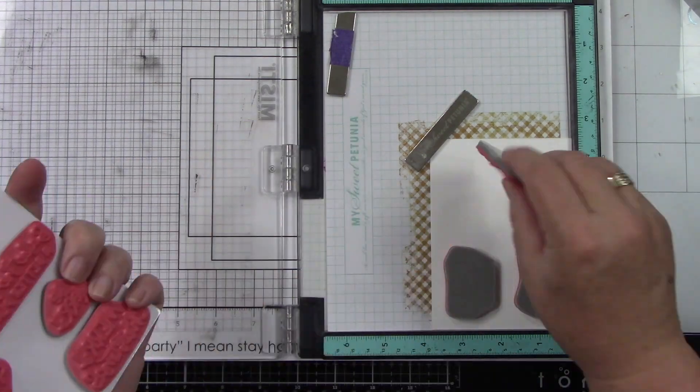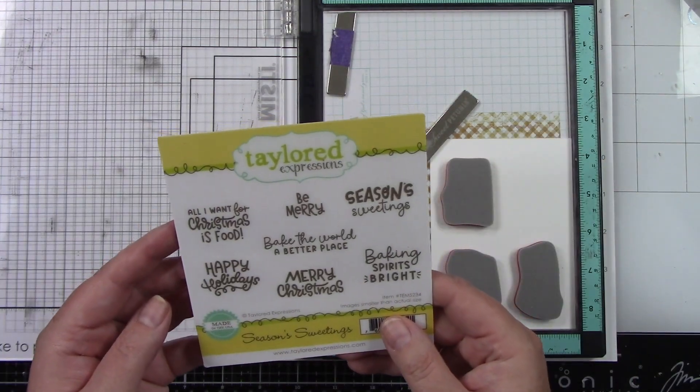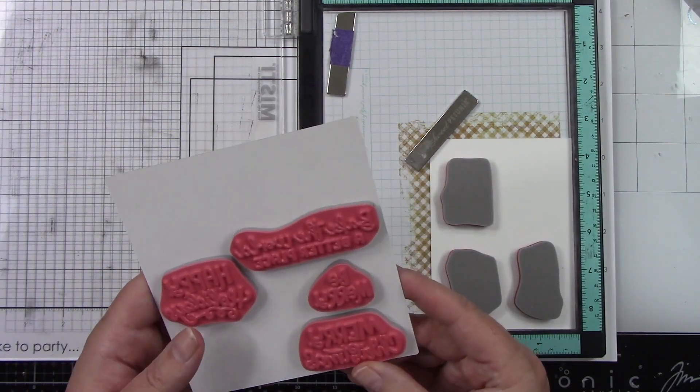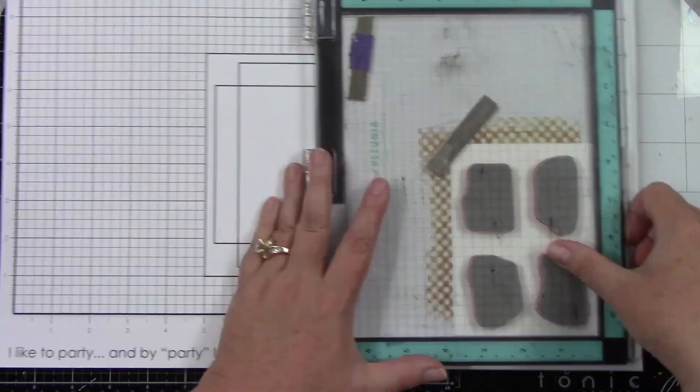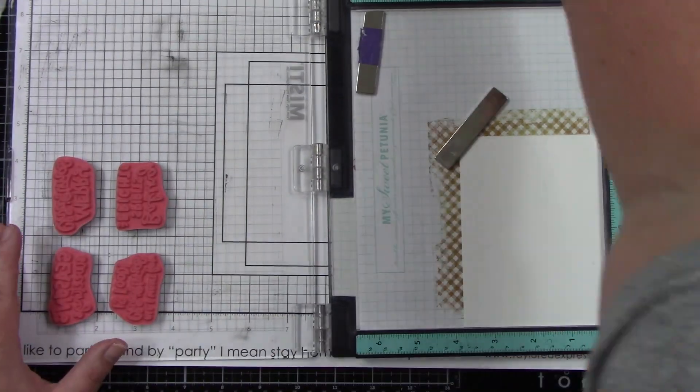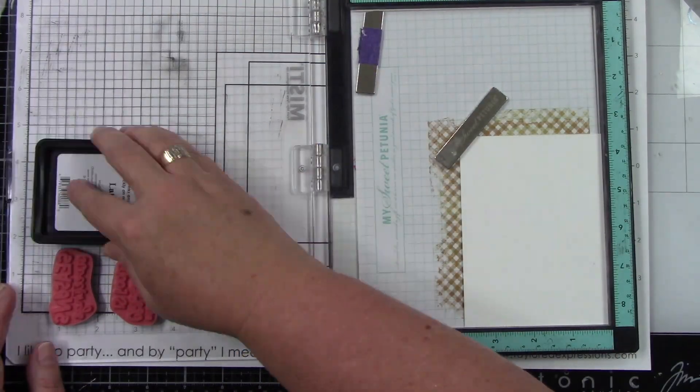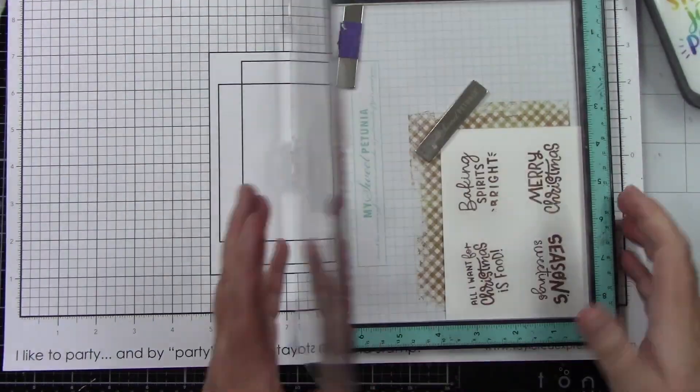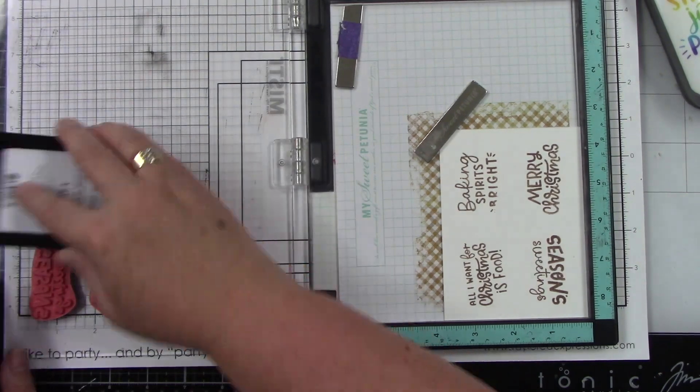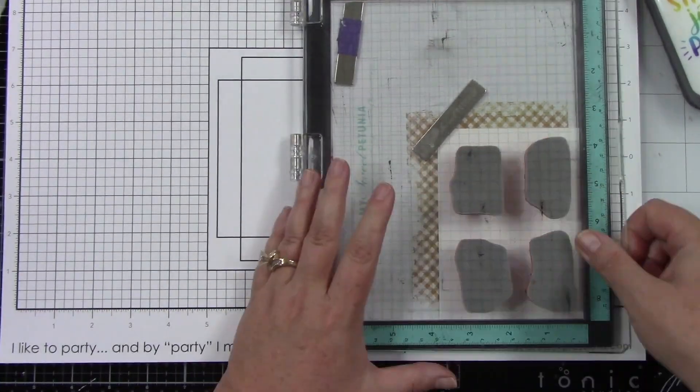Then I'm going to stamp four sentiments because we're going to make four tags from the Seasons Sweetings stamp set. I'm also going to use the coordinating die to die cut these out, but I'm going to stamp this on Sugar Cube cardstock using the new Latte ink. I just thought it'd be fun to kind of do a reverse of what we just did with the cookies.